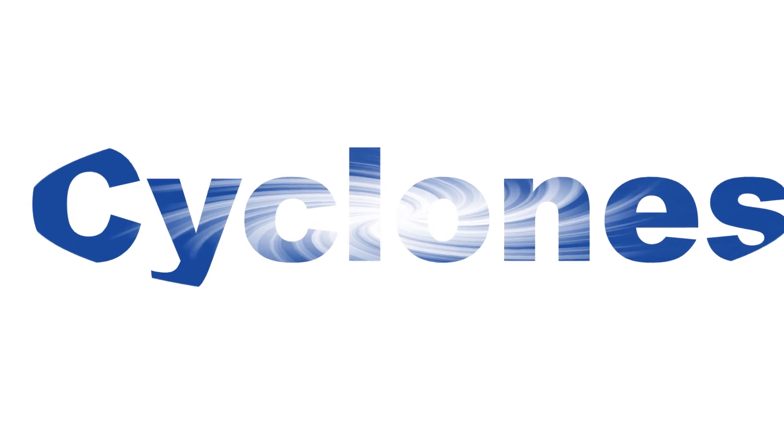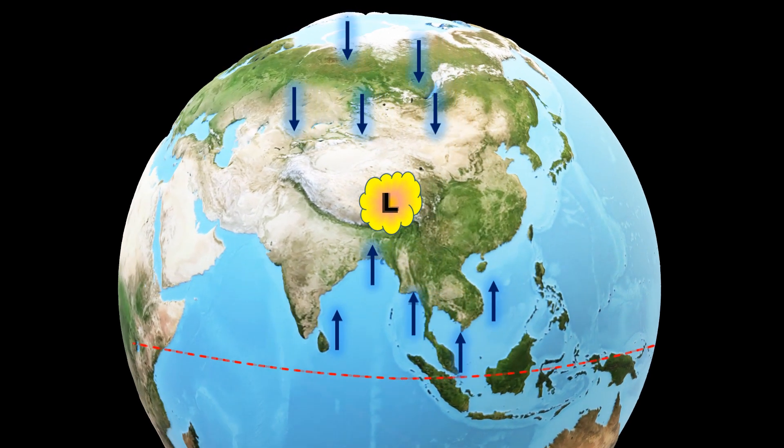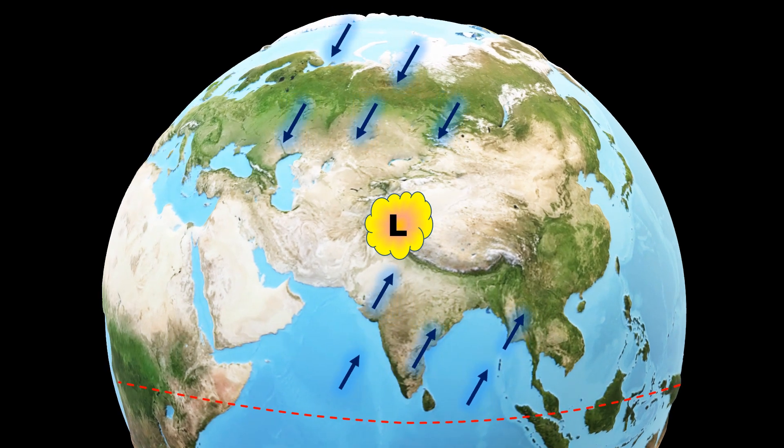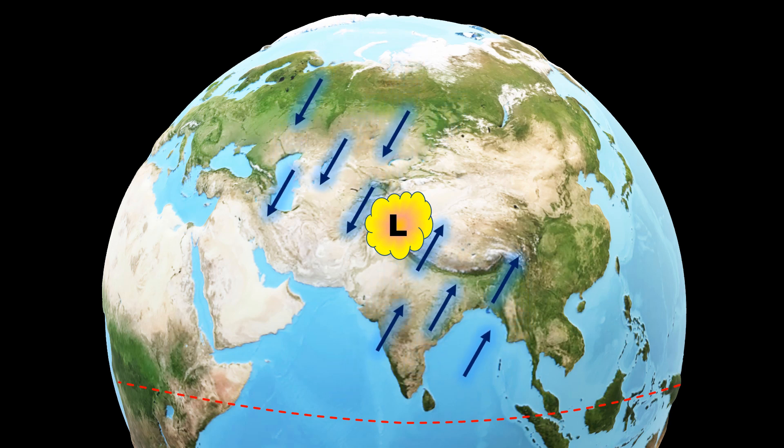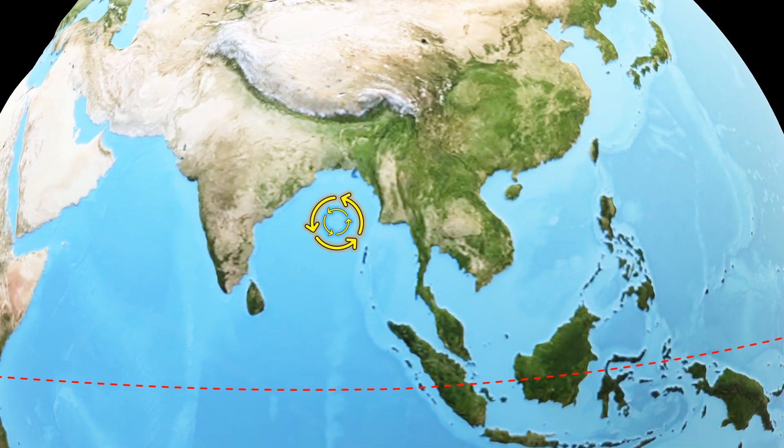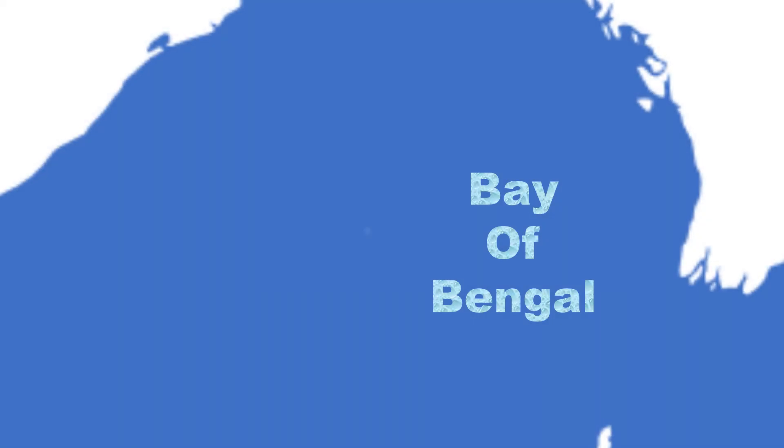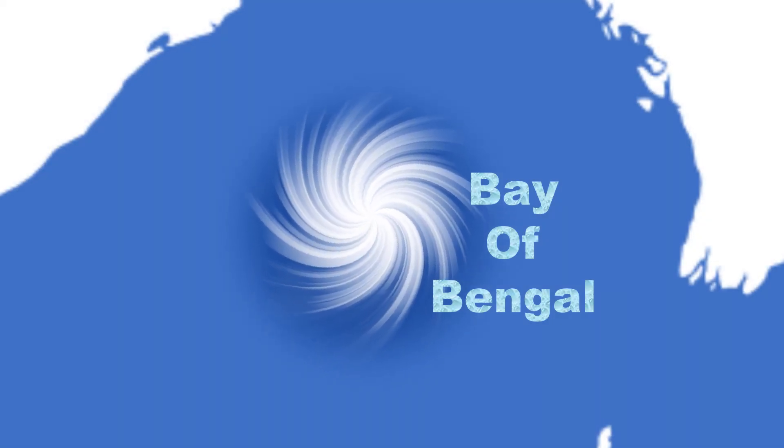Another major determinant of the climate of Tamil Nadu are the cyclones. When a low-pressure area builds up, air from the surrounding high-pressure area flows in towards the low-pressure area. Due to the rotation of the Earth, or more exactly due to the Coriolis force, the winds blowing from opposite directions converge to create a spiraling motion which is anticlockwise in the northern hemisphere and vice versa in the southern hemisphere. When this phenomenon occurs in a large ocean or sea, we call it a cyclone.